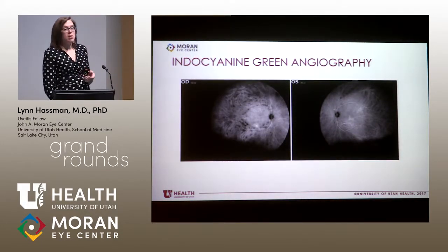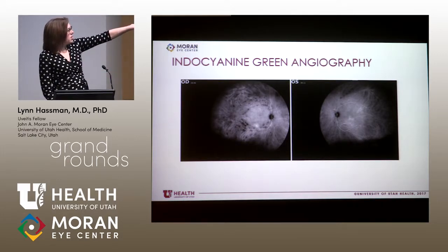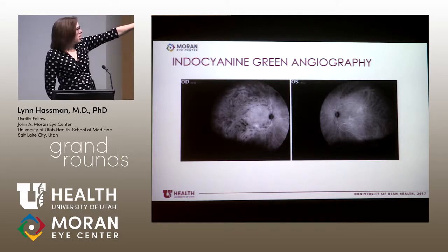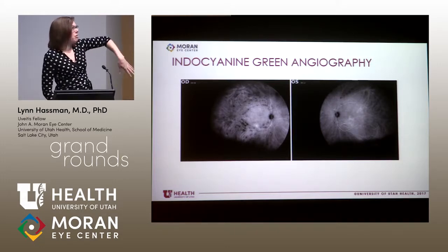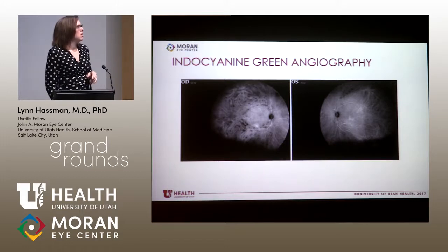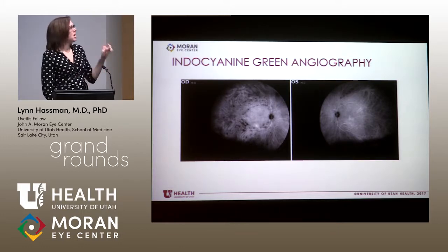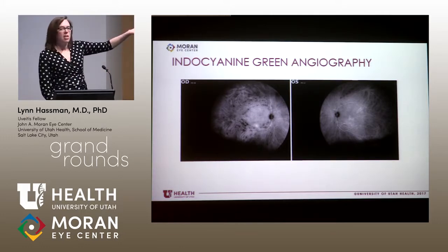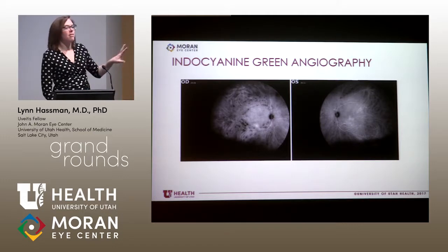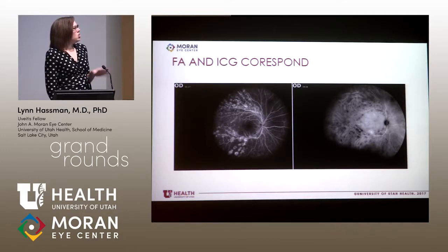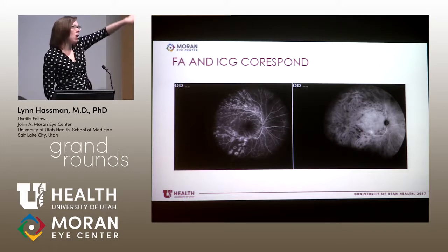On ICG, we can see these lesions following a similar pattern in the right eye around the superior and inferior arcades and branching out, and in the left eye into the superior near periphery. This imaging shows that the retina is involved on fluorescein, and something is blocking the ICG signal either at the level of the RPE or deeper in the choroid. The FA and ICG lesions correspond, following the arcades and then branching out.